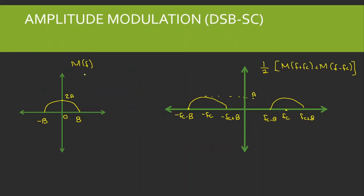If the message signal in the frequency domain has a bandwidth of B hertz, after modulation the spectrum is shifted to ±fc. The edges of the shifted spectrum are at −fc − B, −fc + B, fc − B, and fc + B. The bandwidth of the modulated signal becomes 2B hertz — double the original — because of the two sidebands.